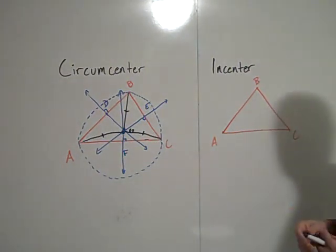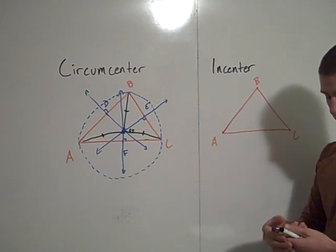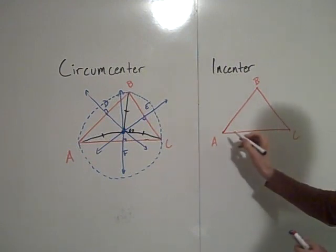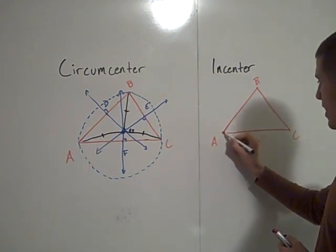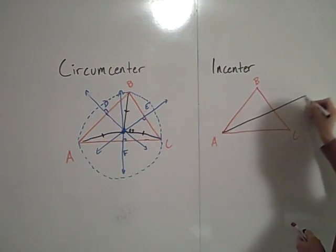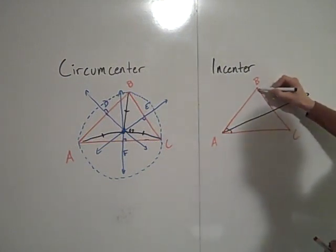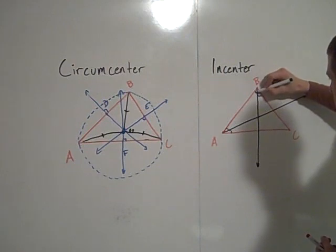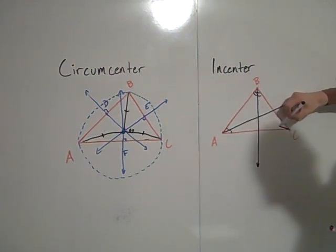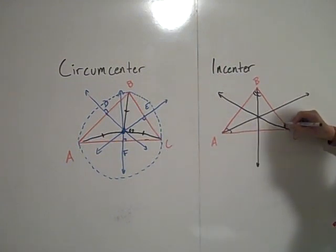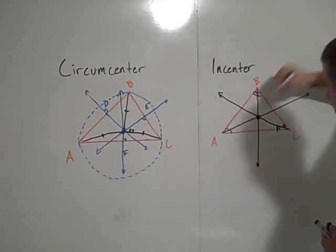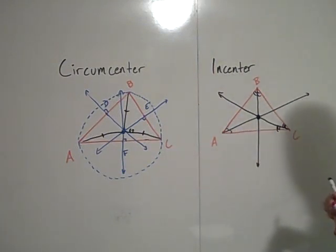The incenter is the point of concurrency of the angle bisectors of each angle in the triangle. So if I bisect angle A, bisect angle B, and bisect angle C, these three bisectors are concurrent, and they're concurrent at the incenter.